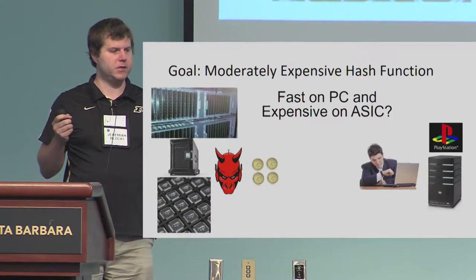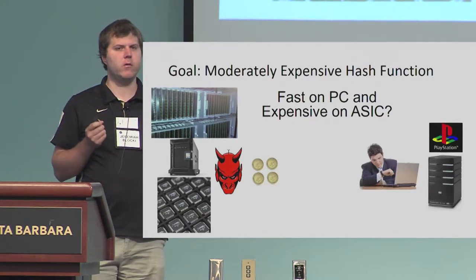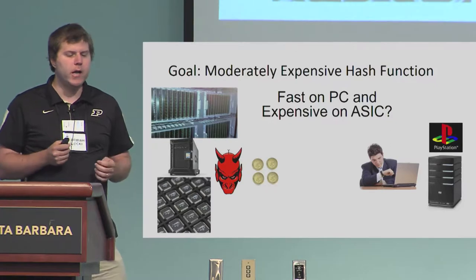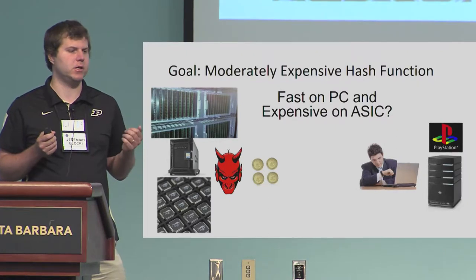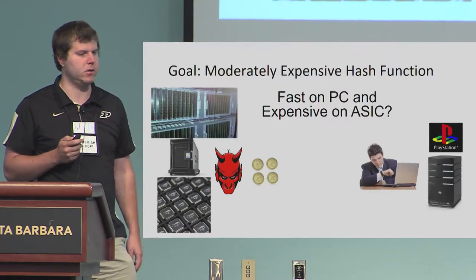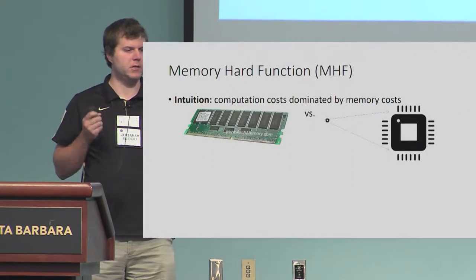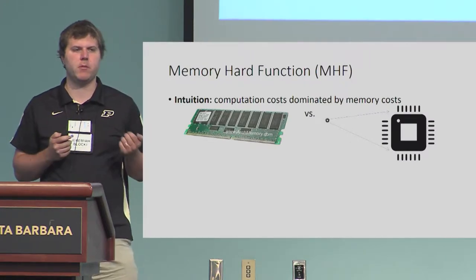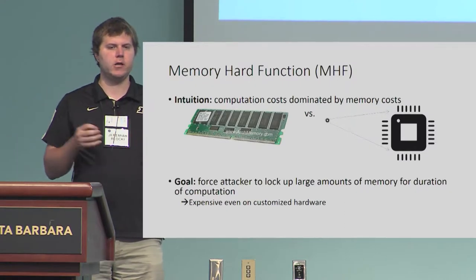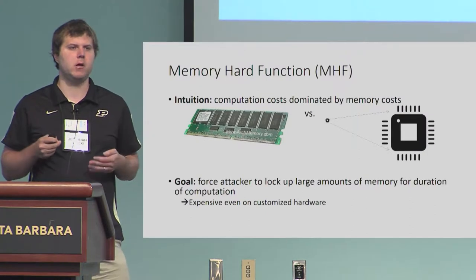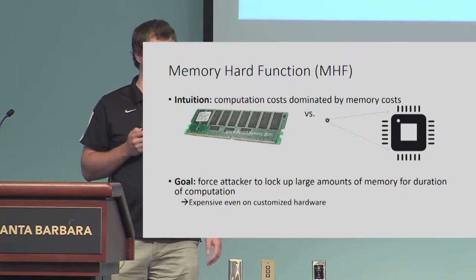So the goal of a memory-hard function, intuitively, we want a moderately expensive hash function which should be fast to evaluate on a personal computer, and expensive to evaluate even if the attacker is using some application-specific integrated circuit — so maybe some supercomputer, as shown on the left here. Intuitively, a memory-hard function is a function where computation costs should be dominated by memory cost. Our goal is to force the attacker to lock up large amounts of memory for the entire duration of computation, which implies the computation will be expensive even if the adversary is using customized hardware.